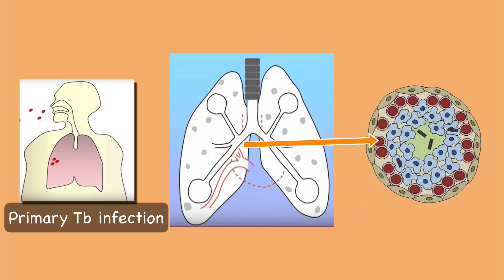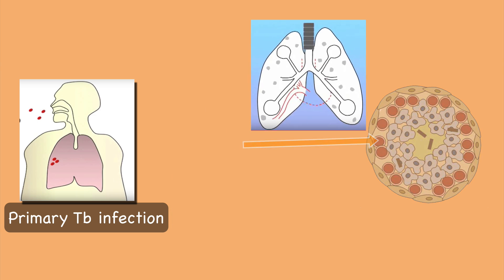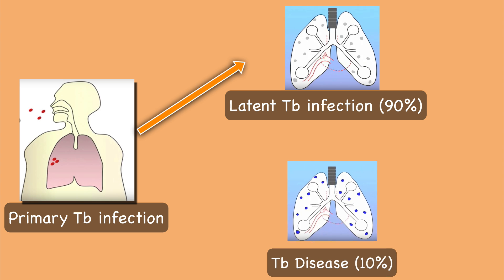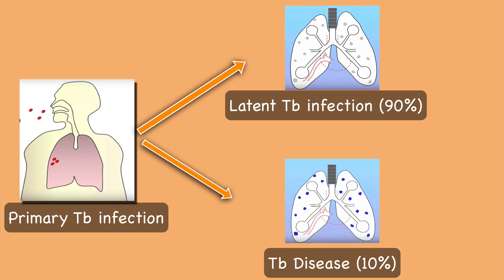Hilar lymph nodes may also be involved, and a granuloma together with involved hilar lymph nodes is called a Ghon complex. This happens in 90% of immunocompetent individuals and is called latent tuberculosis infection. In 10% of individuals, the tubercle bacilli overcome their immune system and multiply, resulting in progression from latent tuberculosis infection to what is known as tuberculosis disease.